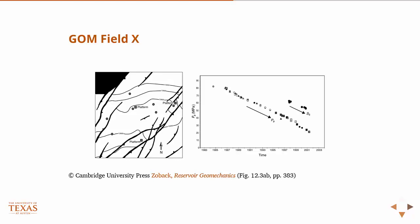And this is the depletion curve, the time history, from the mid-80s until 2001. First of all, you can see a significant amount of depletion — from 80 megapascal when it was brought into production until 2001, it was down below 20. So something like a 60 megapascal change.